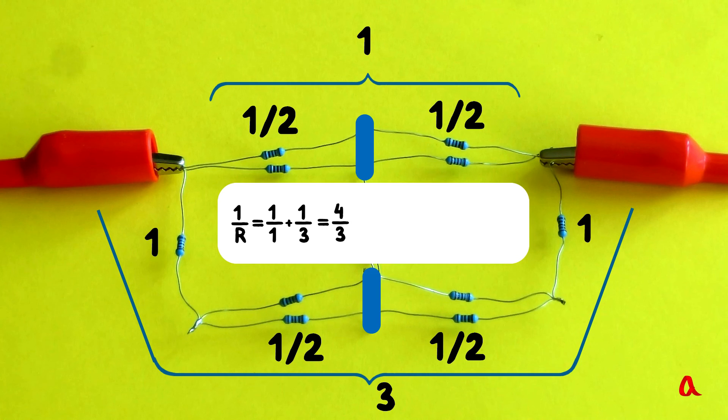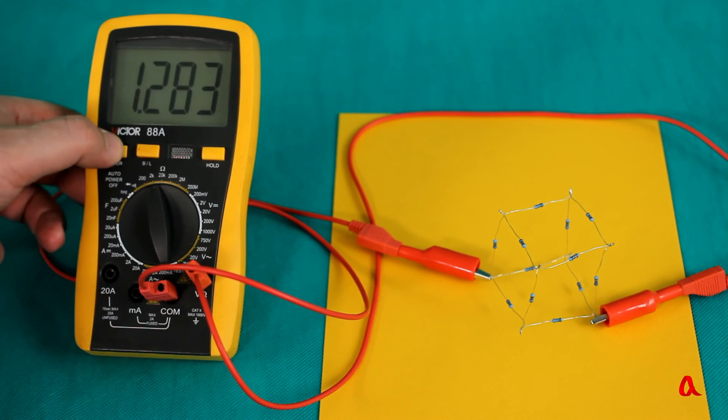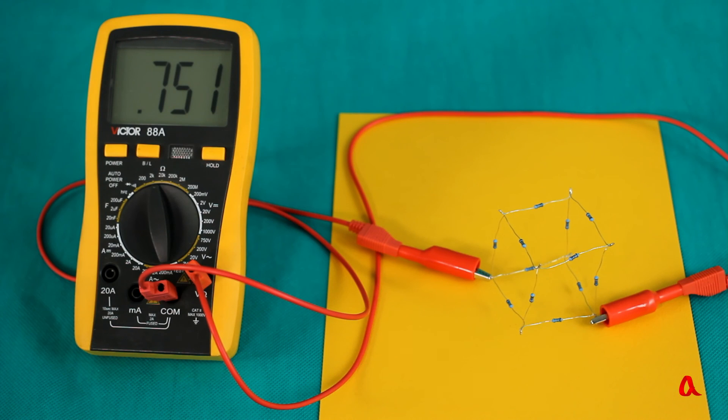It gives us 4 thirds, which means R equals 3 fourths of a kOhm, that is 750 ohms. Again, we check it with a multimeter and again we get very nearly the result we expected to get, 751 ohms.